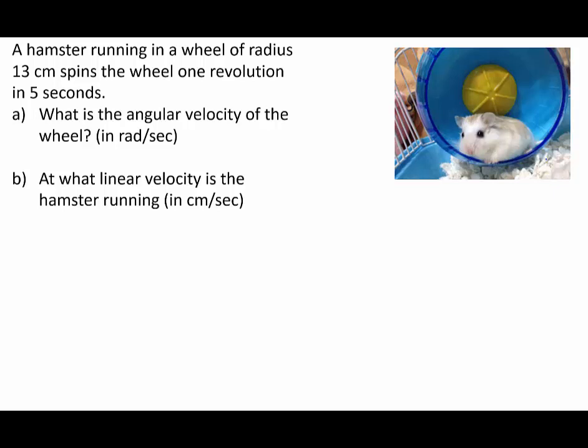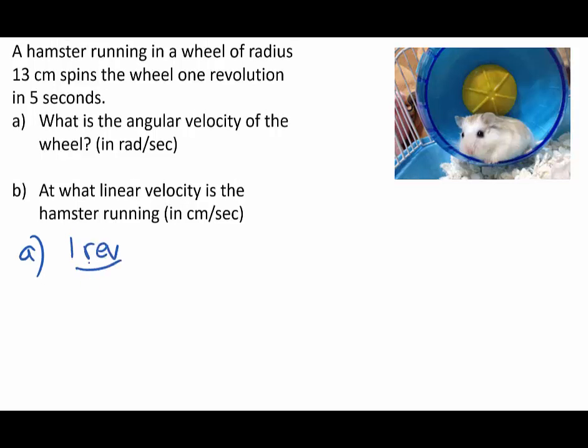What is the angular velocity of the wheel? Let's go ahead and look at that first. What are we given? We are given that the hamster is going one revolution per five seconds.